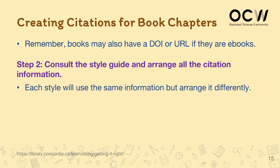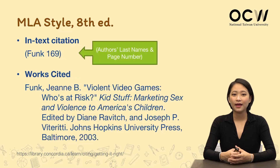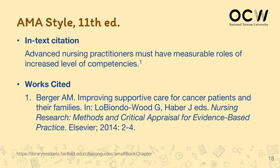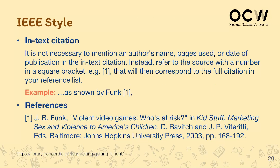Then in the second step, arrange everything according to the style guide. For APA in-text citation with book chapters, you will have the last name of the author along with the publishing year. For MLA, you will have the last name of the author along with the page number. With AMA, citing book chapters also has a tiny number at the end of the cited information, indicating its sequence in the reference list. For Chicago, always include the last name of the author along with the publishing year and page number. For IEEE, when citing a book chapter, include it in a square bracket along with the number indicating its order in the reference list.